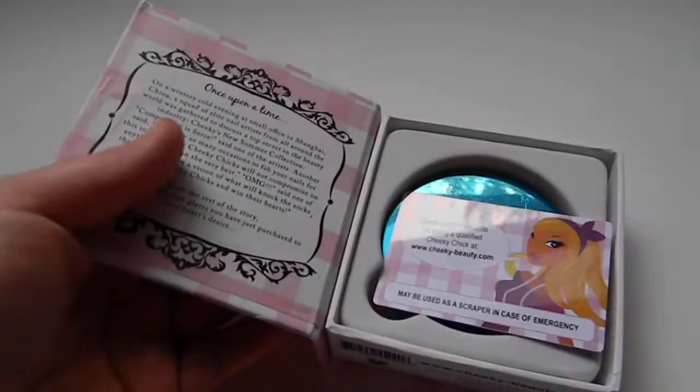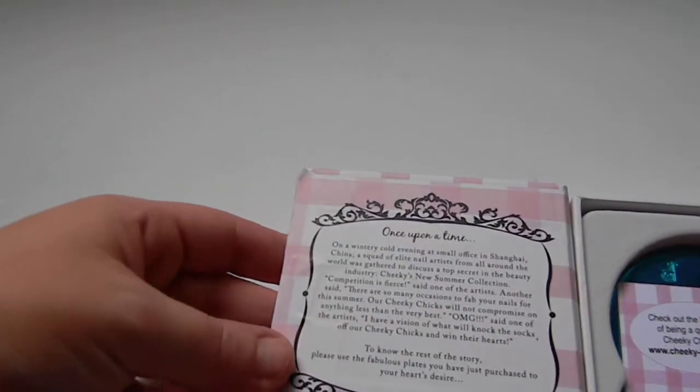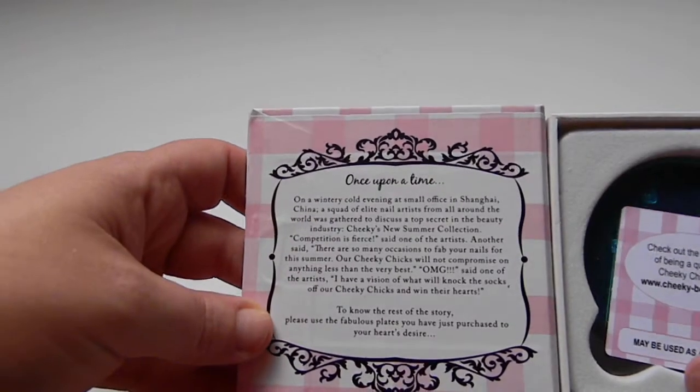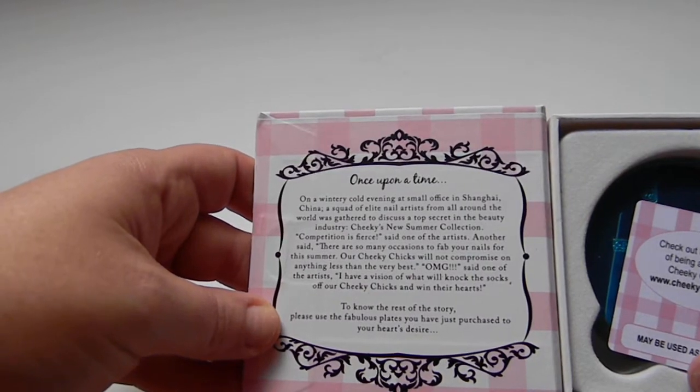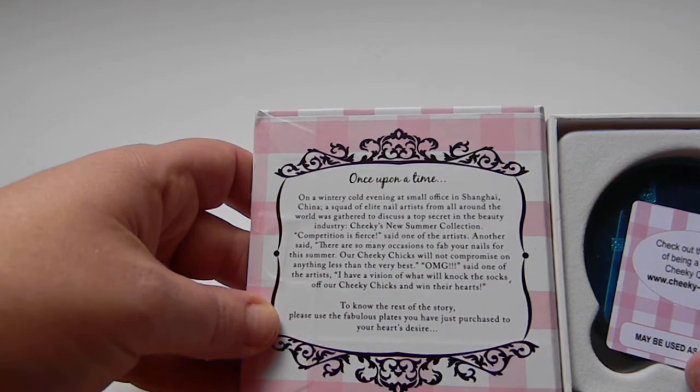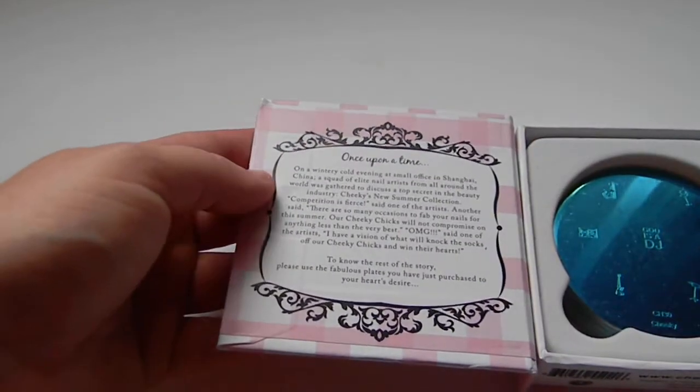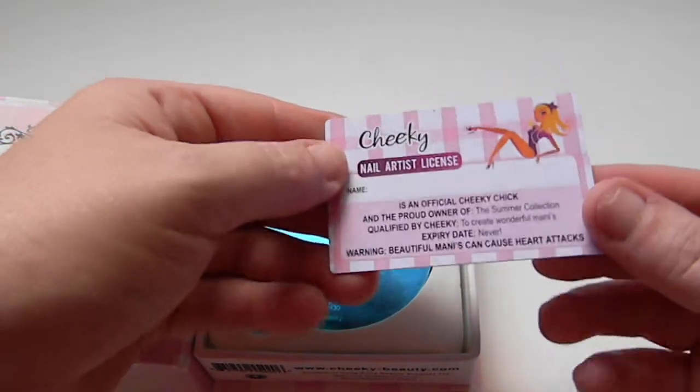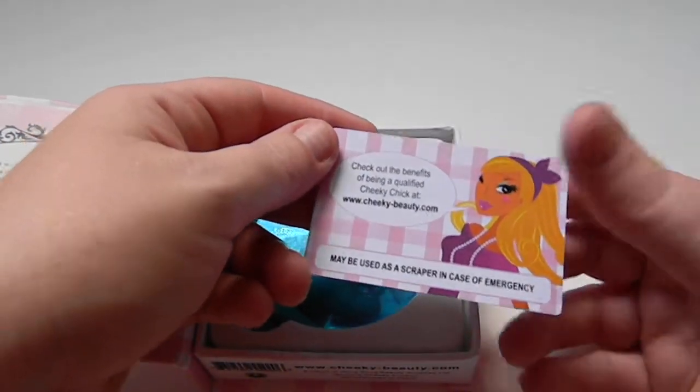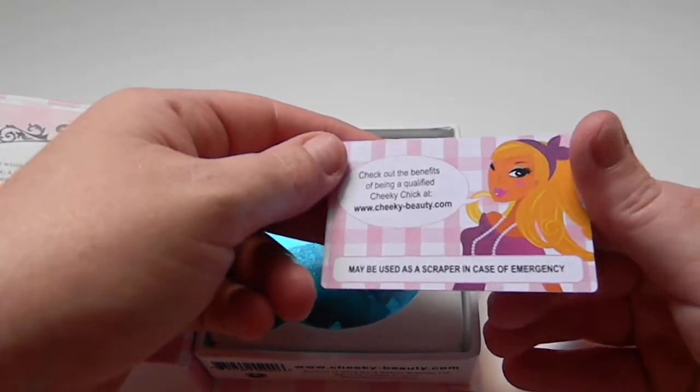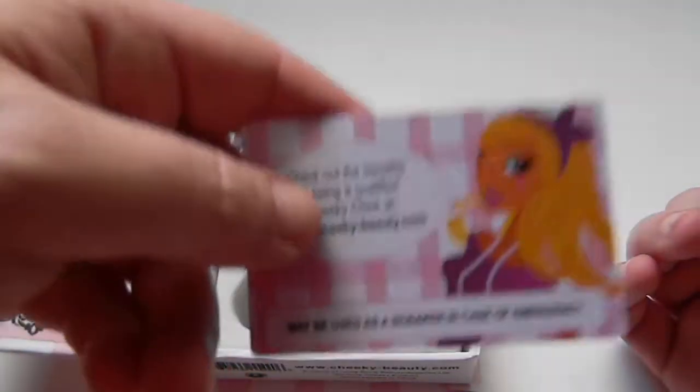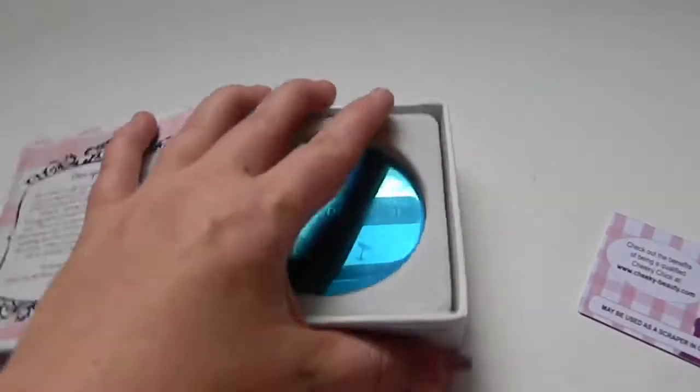So, cute little box and they're talking about something, something, something in China on a wintry night. I have a vision that will knock the socks off our cheeky chicks and win their hearts. You know the rest of the story. Oh, it says to new. And this is the little, I think this is like the little scraper-y thing. Maybe used as a scraper in case of emergency. Okay, so if you cut your finger off, use this and then you'll be fine. Okay, just kidding.